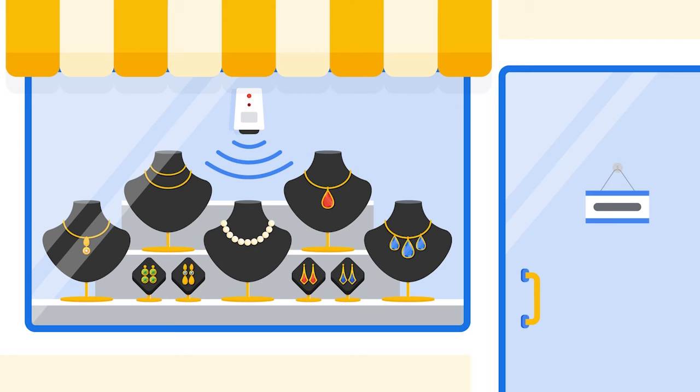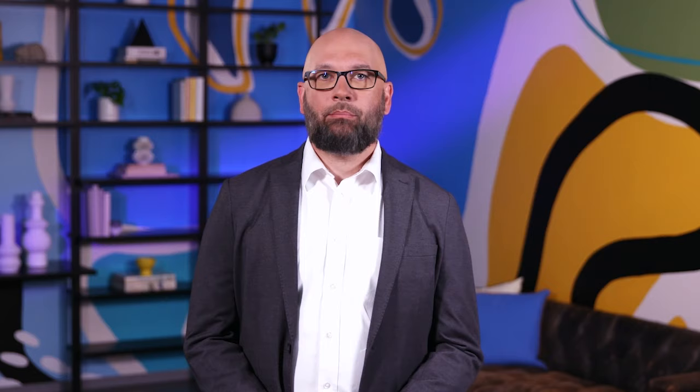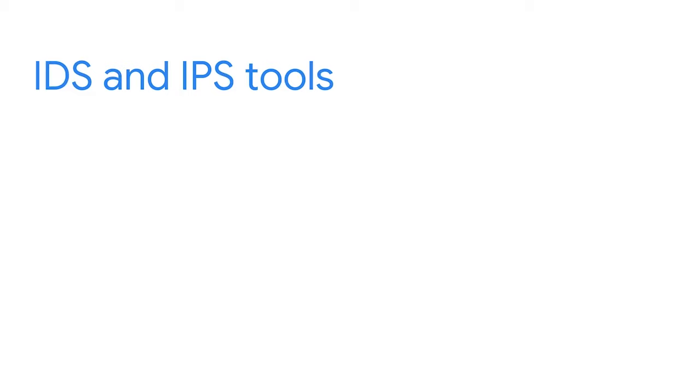Now imagine a jewelry storefront with a window sensor. When the sensor detects that the window's glass has been shattered, it triggers a steel roll-up door to automatically replace the shattered window and prevent unauthorized entry. This is what an intrusion prevention system does. Intrusion prevention systems, or IPS, have all the same capabilities as an IDS, but they can also monitor system activity for intrusions and take action to stop it. Many tools can perform the functions of both IDS and IPS. Some popular tools are Snort, Zeek, Kismet, Sagan, and Suricata. We will be exploring Suricata in upcoming lessons.